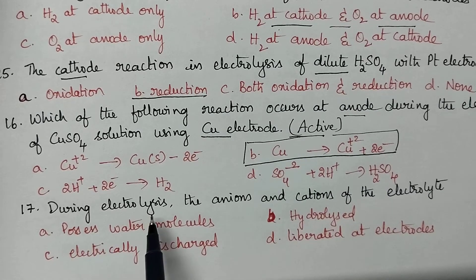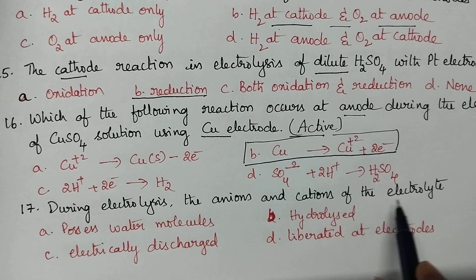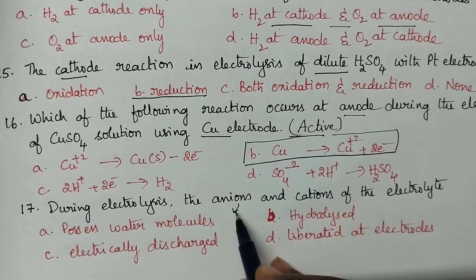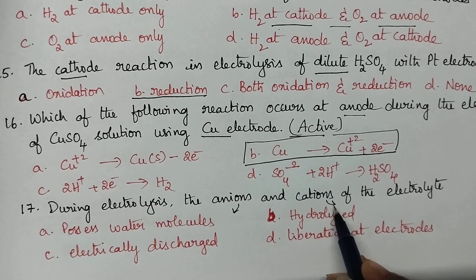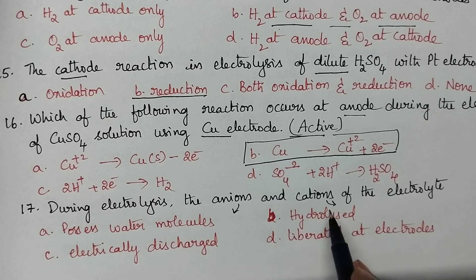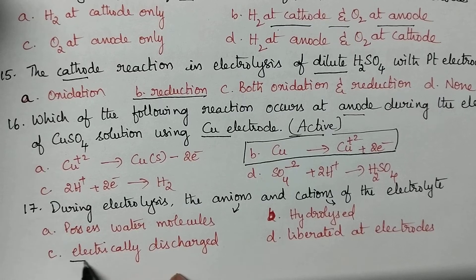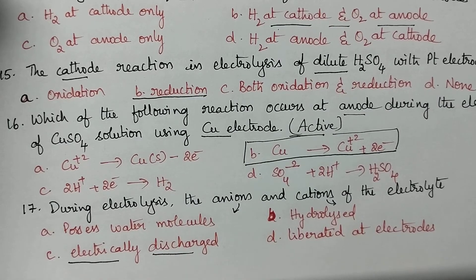During electrolysis, the anions and cations of the electrolyte — anions move to the anode and cations move to the cathode. At the respective electrodes they get electrically discharged.